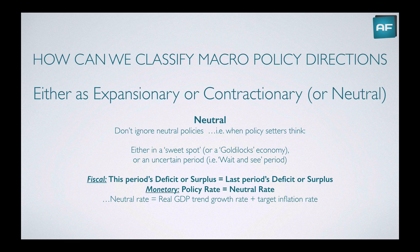In terms of neutral fiscal policy, there's no aggregate change in taxes or expenditure, or the balance of them. Neutral monetary policy is when the policy rate is equal to the neutral rate. The neutral rate is real GDP at the trend growth rate plus the target inflation rate — that's the formula for the neutral rate in regards to monetary policy.